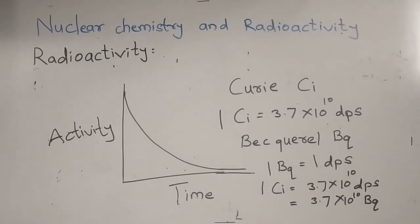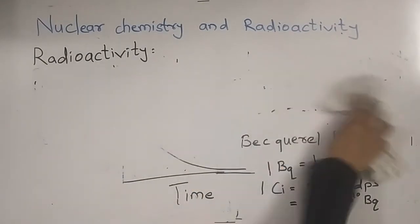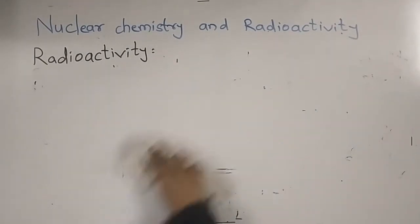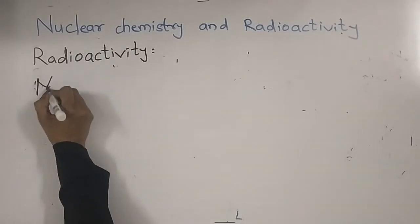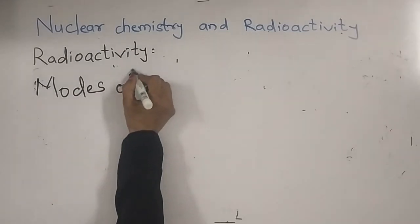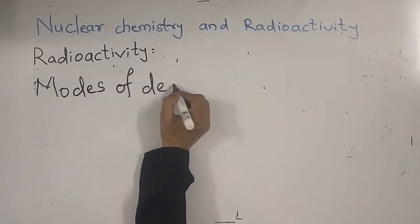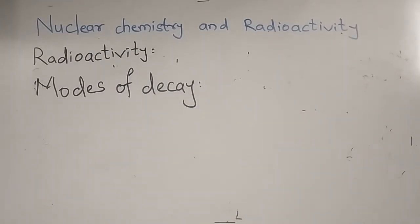Next topic is modes of decay. In radioactivity, the next topic is modes of decay. Radioactive elements decay by three ways: alpha decay, beta decay, and gamma emission.